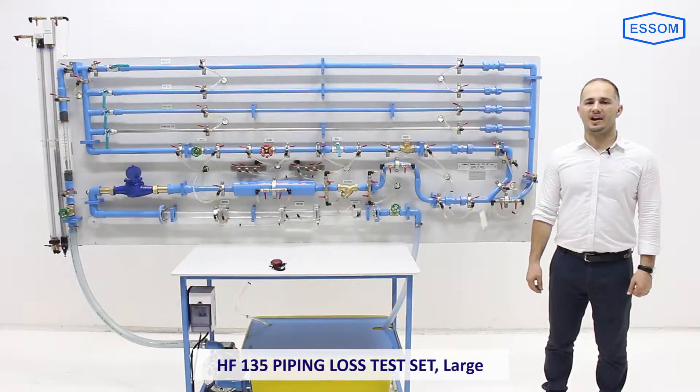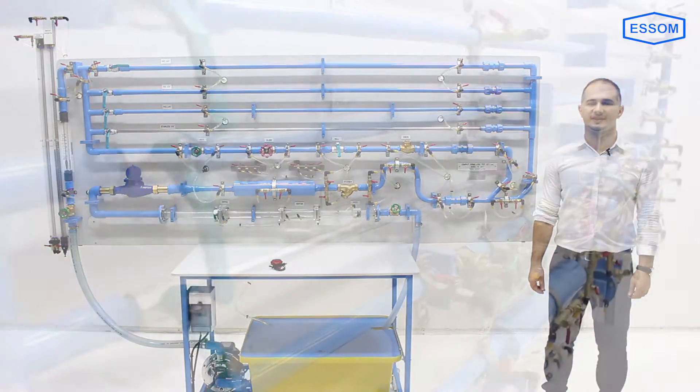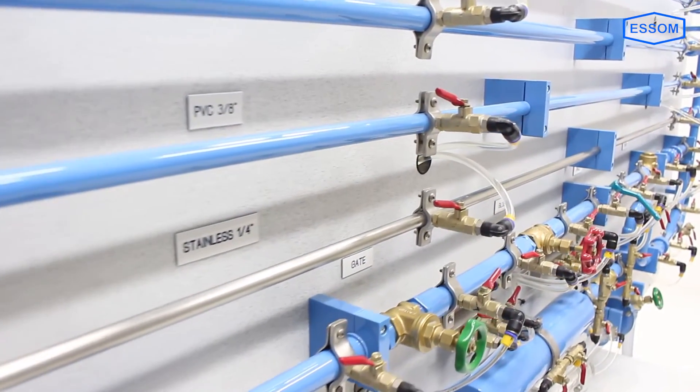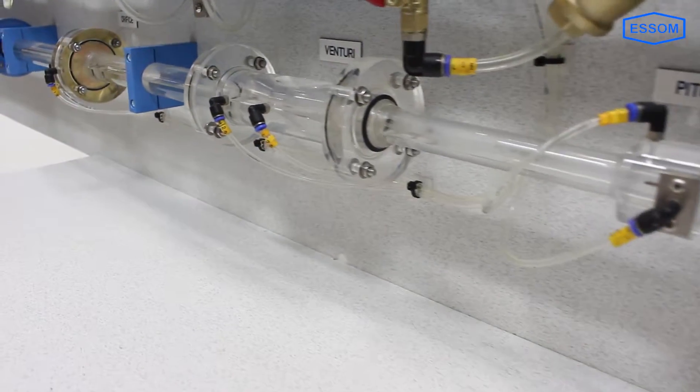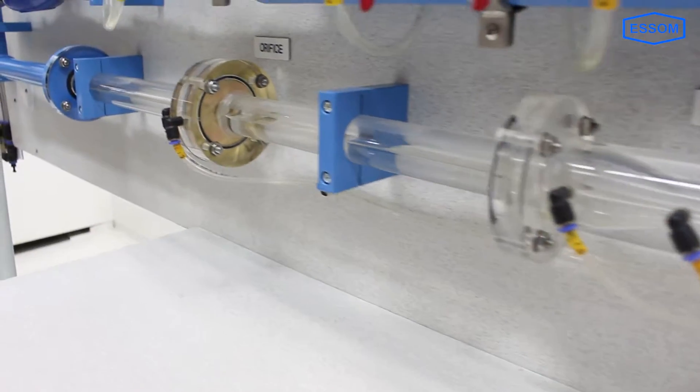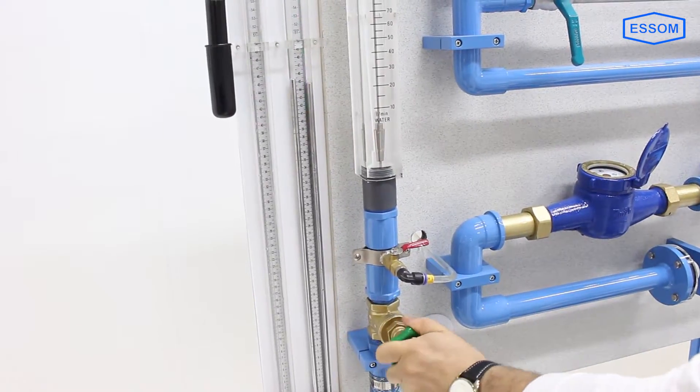SMHF-135 Piping Loss Test Set. This unit is intended for studying the friction loss in pipes, pipe fittings, and valves at various flow rates in turbulent region.